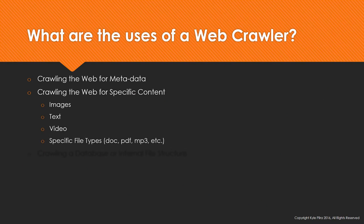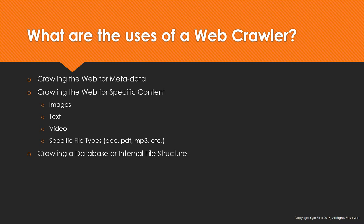So, what exactly are these webcrawler things used for? A lot of them are used for crawling for metadata — that's probably the most popular and biggest use. But a lot of search engines also use them for crawling the web for specific content: things like images, text, video, or a specific file type like doc, pdf, or mp3. You could use mp3 if you wanted a music search engine, for example. Or you could use a webcrawler to crawl a database or an internal file structure, like a Wikipedia dump.